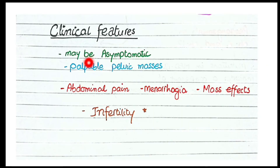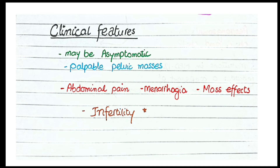As far as clinical features are concerned, most leiomyomas or fibroids are asymptomatic. Sometimes they present as palpable pelvic masses. They can cause abdominal pain due to their large size, and they can cause mass effects — symptoms caused by compression of adjacent structures, such as ureteral compression causing urinary disturbance. They can also cause menorrhagia, especially submucosal fibroids which can bleed, resulting in heavy menstrual bleeding. The most important complication is infertility, because the leiomyomas develop in the uterine wall and interrupt the development of the fetus.